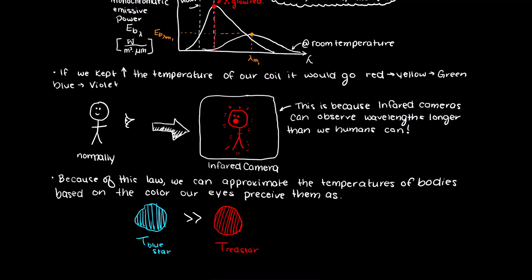So in summary, Wien's displacement law is an equation that helps us understand how emissive power curves change with the absolute temperature of a given body. Thank you for checking out this video and I hope it helped your understanding about what Wien's displacement law is and what it is used for.